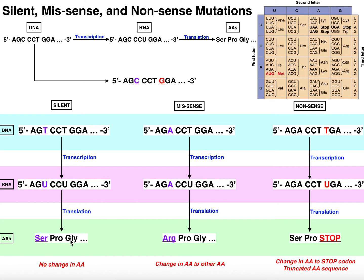I did mutate the cytosine to a thymine, so surely the amino acid encoded by the first codon will be different — right? Not necessarily. Even though I mutated the C to a T, which as RNA becomes U, we look up AGU on the genetic code table and it's still the amino acid serine. Despite mutating the C to a T, it did not change the amino acid that was encoded — it did not change the amino acid sequence in the protein.